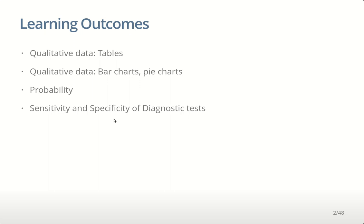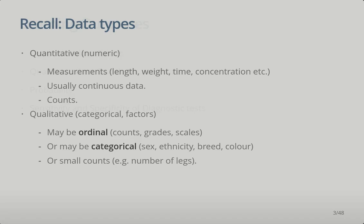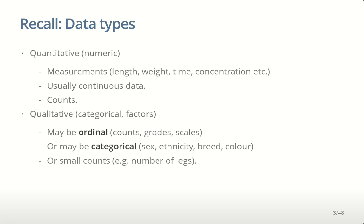Quantitative numeric measures are often continuous data, so they can have as many decimal places as you like, or they could be large counts. Typically we summarize those using things like the mean, the median, and the range, or using graphs like histograms and density plots or box plots.